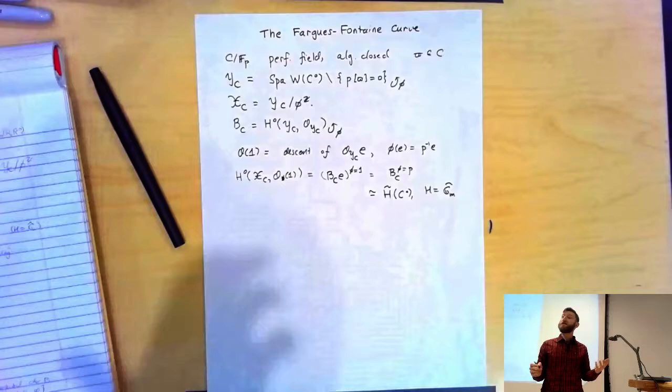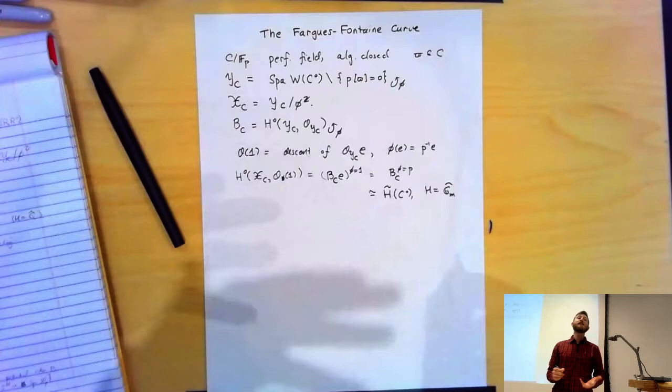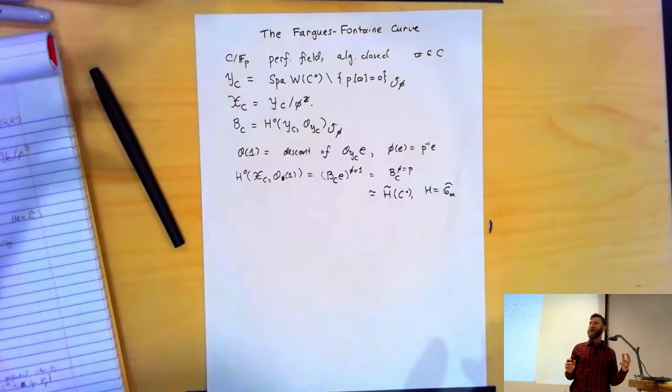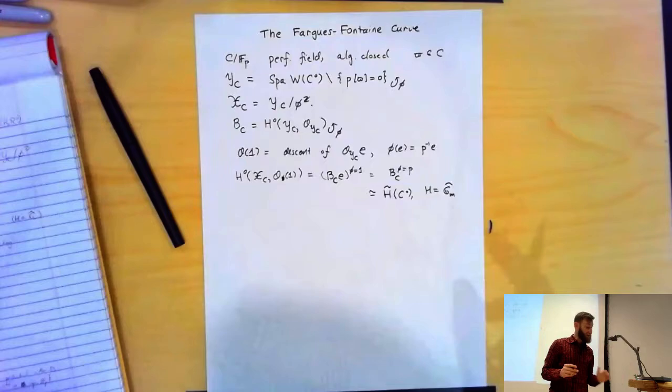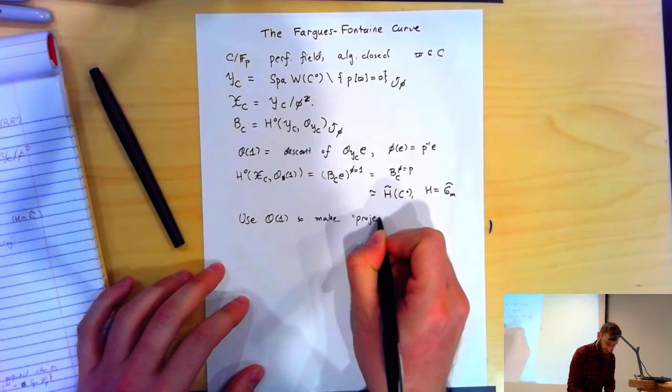The theories are kind of coming together here. Fargues and Fontaine studied this, and their key insight was that if you declare O(1) to be ample, you can make a projective embedding of the analytic space X_C. So I'm going to use O(1) to make a kind of projective embedding.